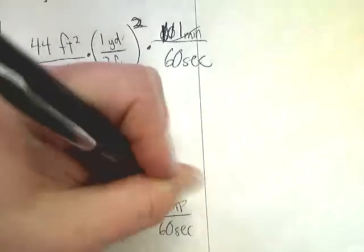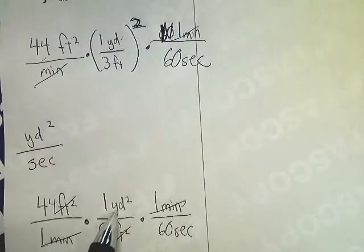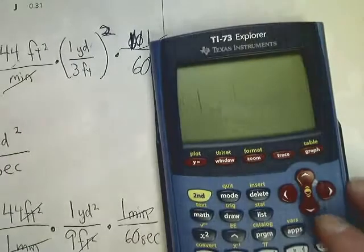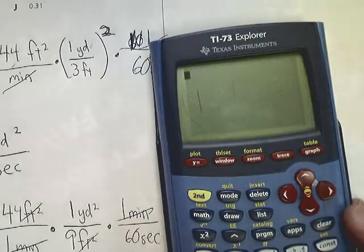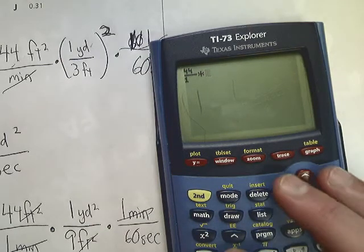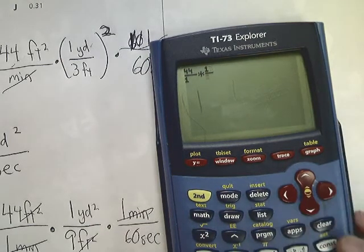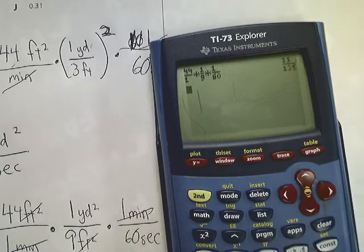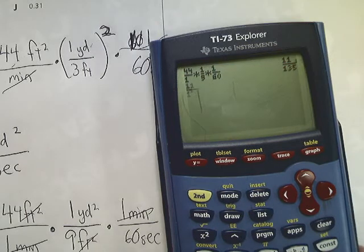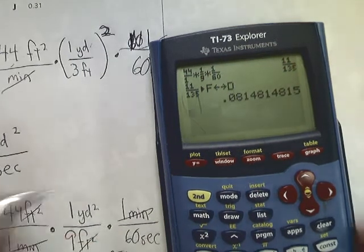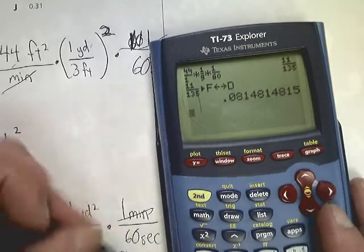Times one minute over 60 seconds. I can cancel my minutes and my feet squared, so all I'm left with is yard squared per 60 seconds. There's a couple ways I can go about dealing with this. If you can make fractions, it's the simplest way. Remember, you're multiplying these terms together. It gives you 11 over 135, or as a decimal, 0.081.